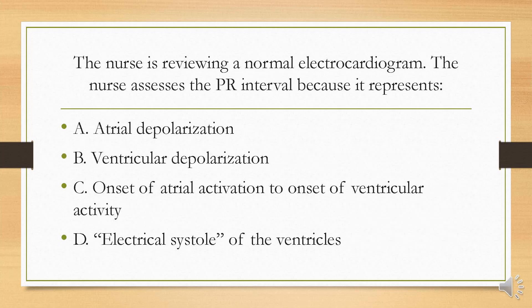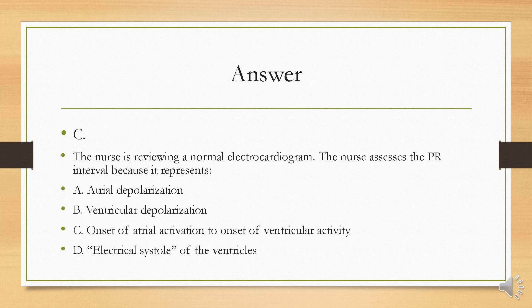The nurse is reviewing a normal electrocardiogram and assesses the PR interval, because it represents: A, atrial depolarization; B, ventricular depolarization; C, the onset of atrial activation to the onset of ventricular activity; or D, electrical systole of the ventricles. The answer is C. The PR interval represents the onset of atrial activation to the onset of ventricular activity. The P wave represents atrial depolarization, the QRS complex represents ventricular depolarization, and the QT interval represents electrical systole of the ventricles.